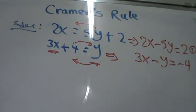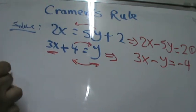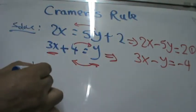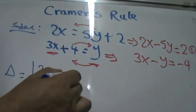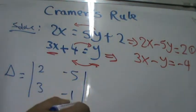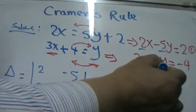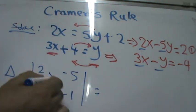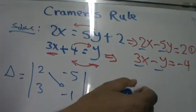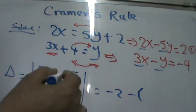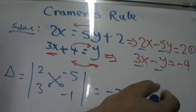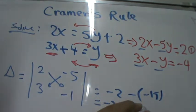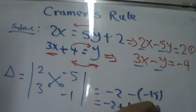Now find delta: the determinant with entries 2, negative 5, 3, negative 1. Evaluate: 2 times negative 1 equals negative 2, minus negative 5 times 3 equals negative 15. So negative 2 minus negative 15 equals negative 2 plus 15, which is 13. Delta equals 13.